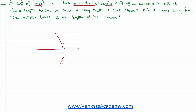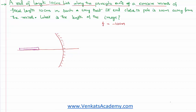The focal length of that mirror is given as f equal to 10 centimeter. Being a concave mirror, I can write it as minus 10 centimeter. The end of the rod closer to the pole is 20 centimeter away from the mirror. If this is the rod, this is end A — the end closer to the pole — it is at a distance of 20 centimeter from the pole. The length of the rod is 10 centimeter, so the other end will be at a distance of 30 centimeter.